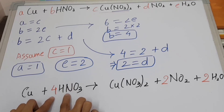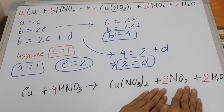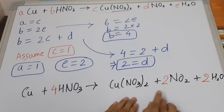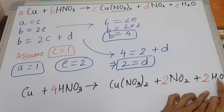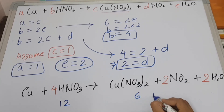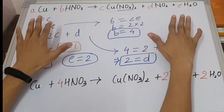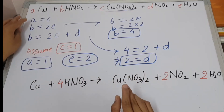Now let's verify nitrogen: we have 2 nitrogen from Cu(NO3)2 plus 2 nitrogen from NO2, total 4. On the reactant side, 4 times 1 equals 4 nitrogen. Now oxygen: on the reactant side, 3 times 4 equals 12 oxygen. On the product side: 6 from Cu(NO3)2, plus 4 from 2NO2, plus 2 from H2O — that is 6 plus 4 plus 2 equals 12. So our oxygen equation is also correct — the equation is balanced.